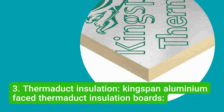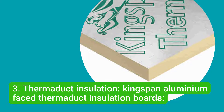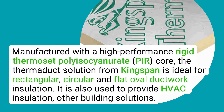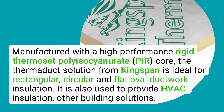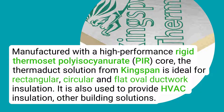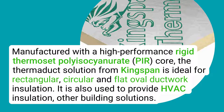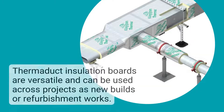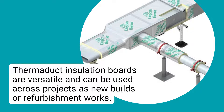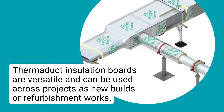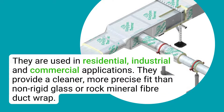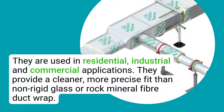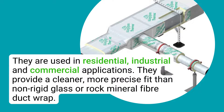Thermaduct Insulation — Kingspan Aluminium Faced Thermaduct Insulation Boards. Manufactured with a high-performance rigid thermoset polyisocyanate core, the Thermaduct solution from Kingspan is ideal for rectangular, circular, and flat-oval ductwork insulation. It is also used to provide HVAC insulation and other building solutions. Thermaduct insulation boards are versatile and can be used across projects as new builds or refurbishment works. They are used in residential, industrial, and commercial applications. They provide a cleaner, more precise fit than non-rigid glass or rock mineral fibre duct wrap.